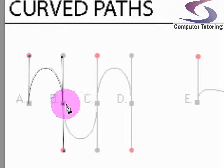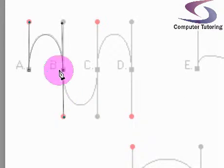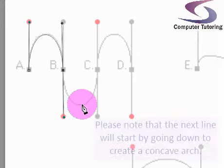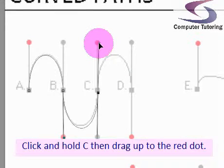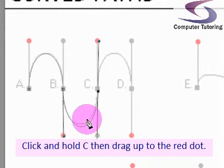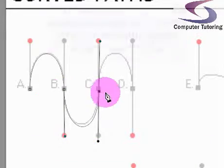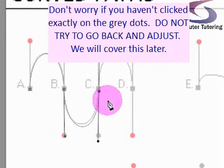So now we're going to go to the C. Notice that the next line is going to go in a convex manner, into a U shape. So what I'm going to do is I'm going to click and hold my mouse button down on C. I'll drag up to the red dot up here. And you can see the line's drawn here. As with me, don't worry if you don't click exactly on the grey dot there.